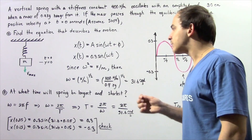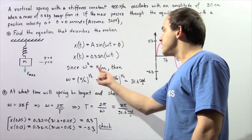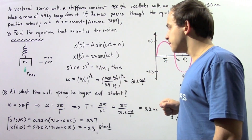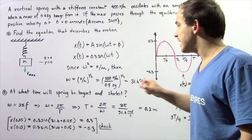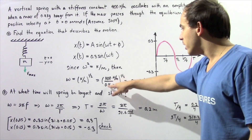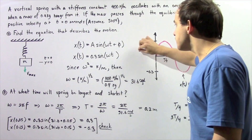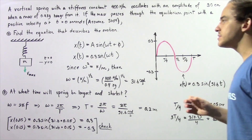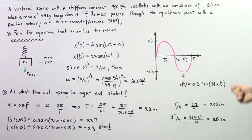Recall the equation that relates angular frequency with k and m, where k is our stiffness constant and m is our mass: ω² = k/m. So angular frequency ω = √(k/m). We know k is 400 newtons per meter and m is 0.4 kilograms, giving us √1000, which is about 31.6 radians per second. Substituting this into our equation, the displacement of the object with respect to time is: x(t) = 0.3 sine(31.6t), where t is given in seconds.